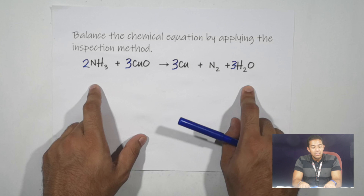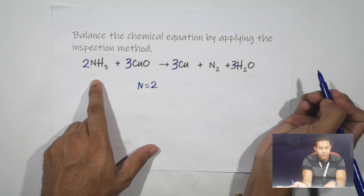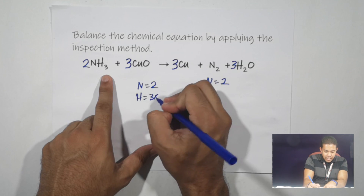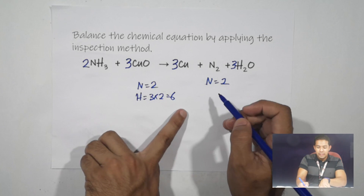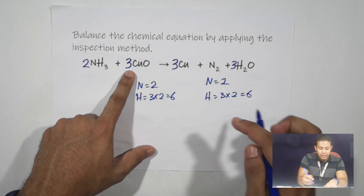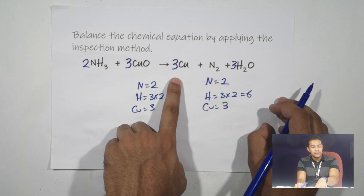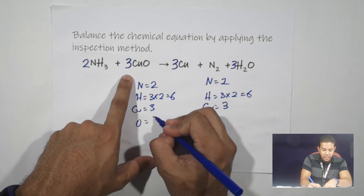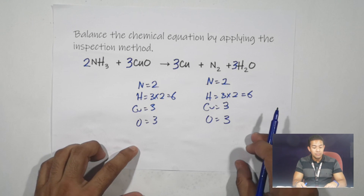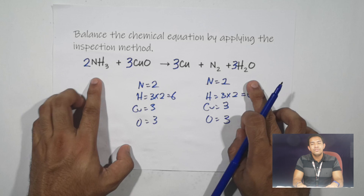Let's check whether all elements are balanced. Nitrogen: two on the reactant, two on the product — balanced. Hydrogen: three times two equals six on the reactant; three times two equals six on the product — balanced. Copper: three on the reactant, three on the product — balanced. Oxygen: three on the reactant, three on the product — balanced. As you can see, the number of elements on the reactant and product are balanced. Here is the answer for the first question.